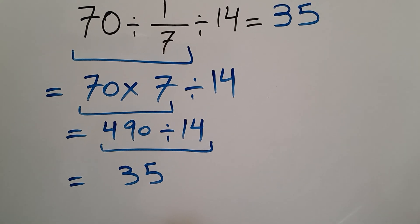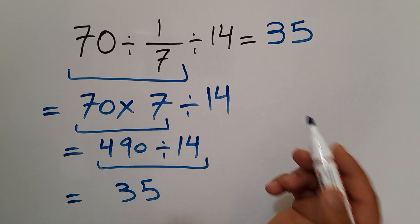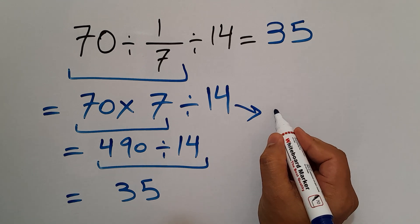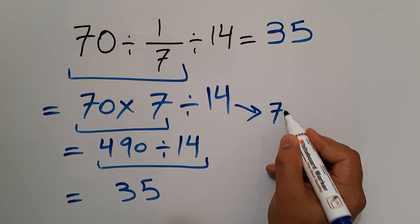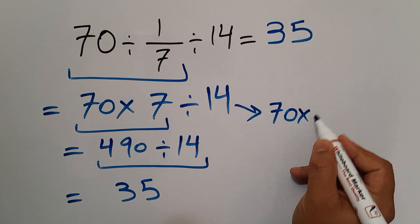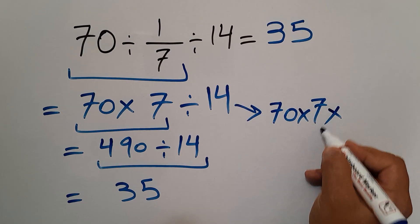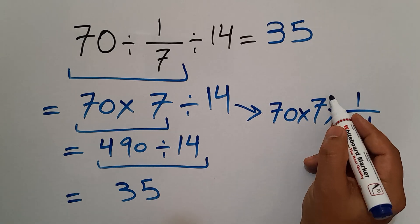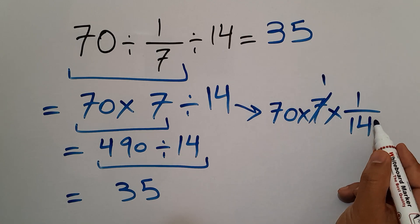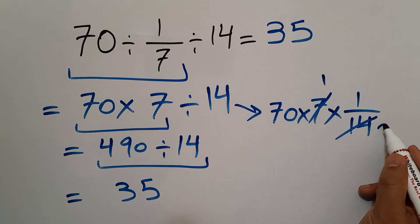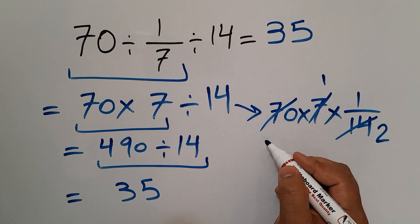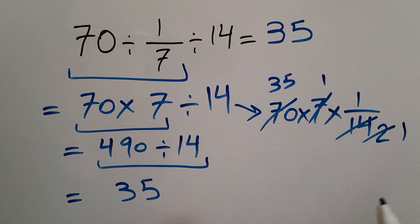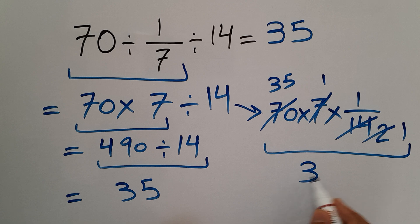Or we can use the KCF rule another way. We write 70 times 7, and again times 1 over 14. Then we simplify: 7 divided by 7 gives us 1, 14 divided by 7 equals 2, 70 divided by 2 equals 35, and 2 divided by 2 equals 1. So we get just 35.